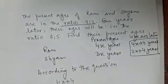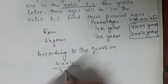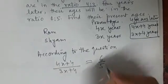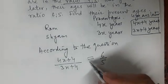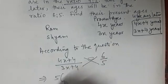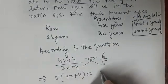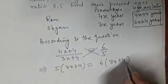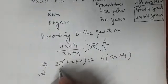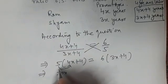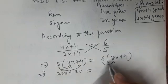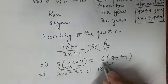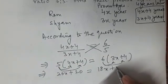4x plus 4 upon 3x plus 4 is equal to 6 upon 5. This will give you a linear equation in one variable. When we cross multiply, 5 into 4x plus 4 will be equal to 6 into 3x plus 4. Simplifying further using the distributive law, 20x plus 20 is equal to 18x plus 24.